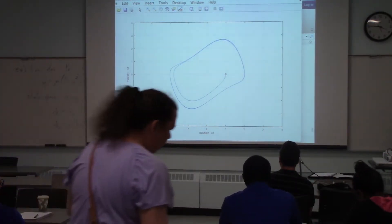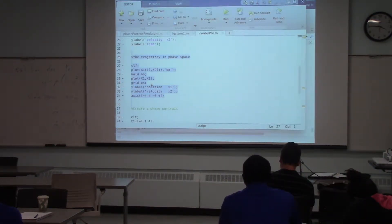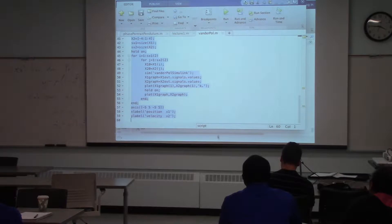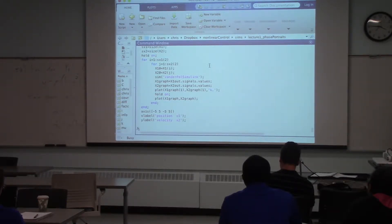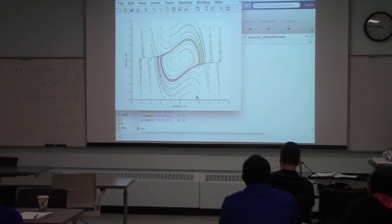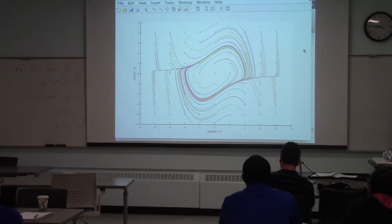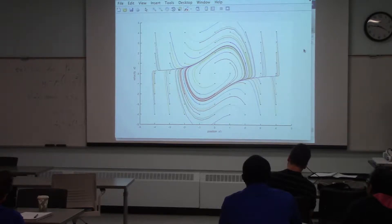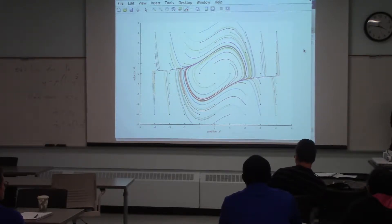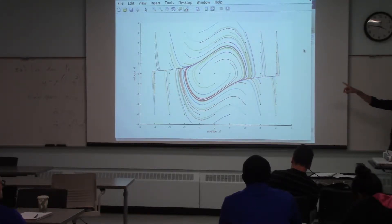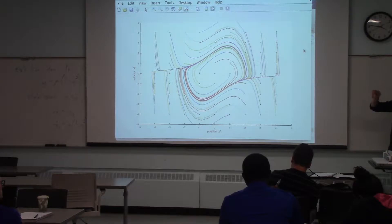If I do the phase portrait, it turns out that anywhere that I start, I'm going to end up on this limit cycle. This is only a second-order system, so I don't have any chaotic behavior. If I introduce a third-order or fourth-order system, I could have chaotic behavior. In chaotic behavior, you can have more than one limit cycle, and you can switch between those limit cycles unpredictably.